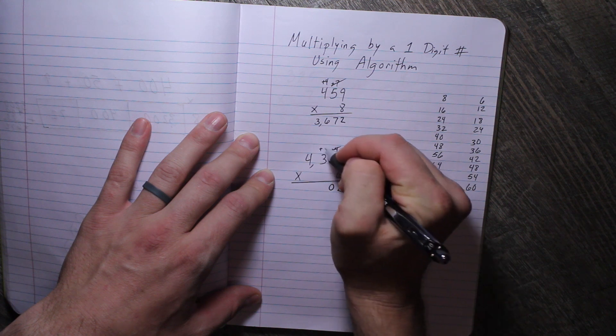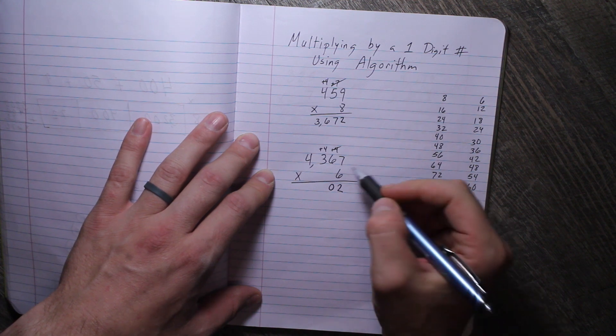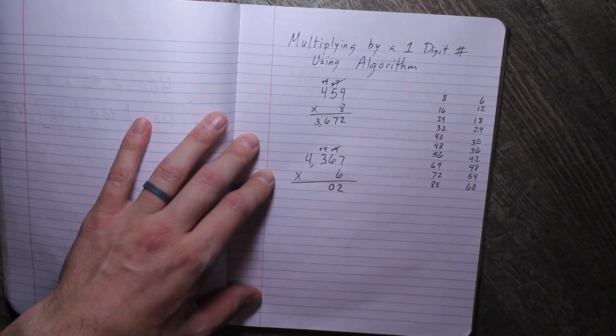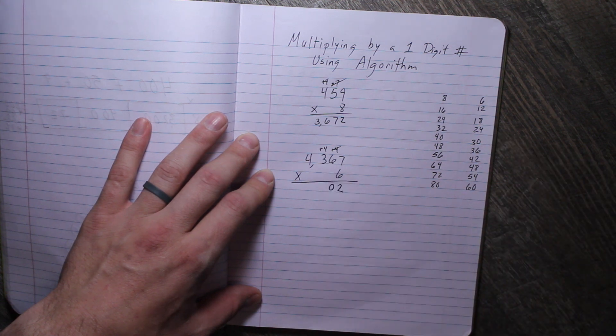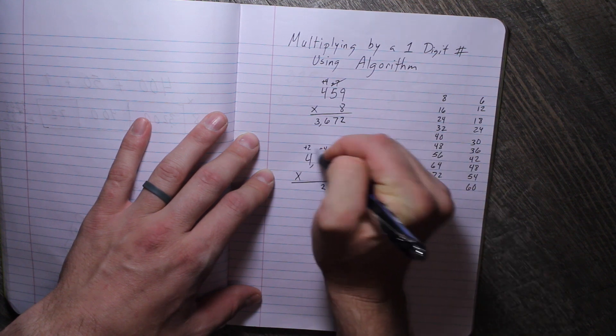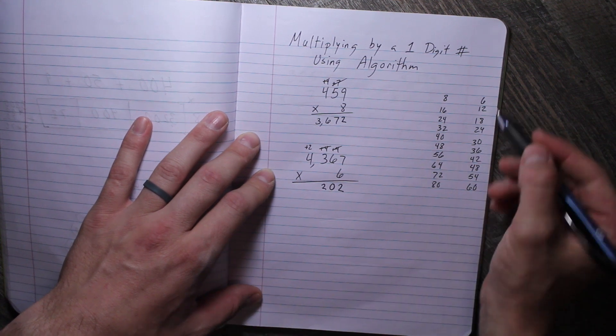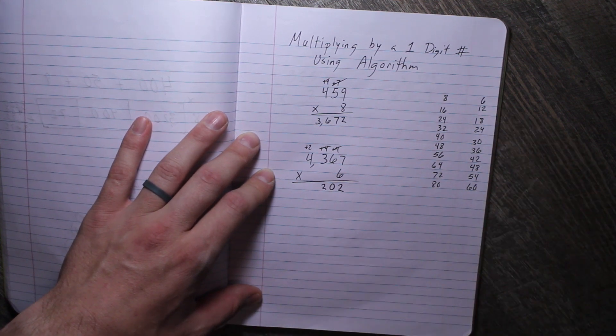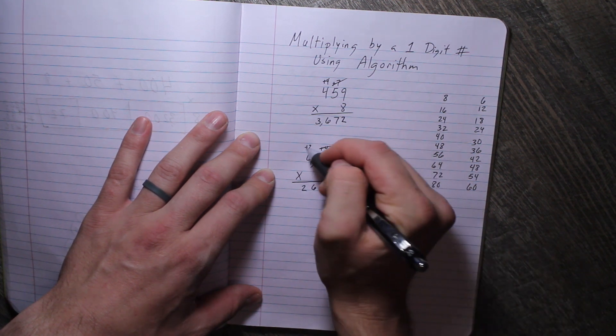So 40—I'm going to have to put a 4 above the hundreds place now because we're adding and multiplying at the same time. 6 times 3 is 18, plus 4 is 22. Carry the 2. 6 times 4 is 24, plus 2 is 26. So now we can see our answer is 26,202.